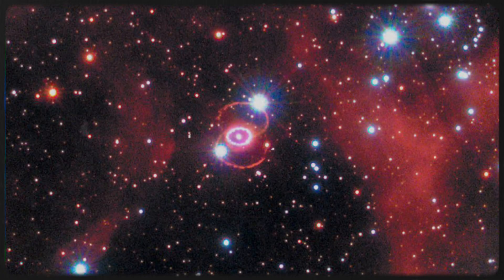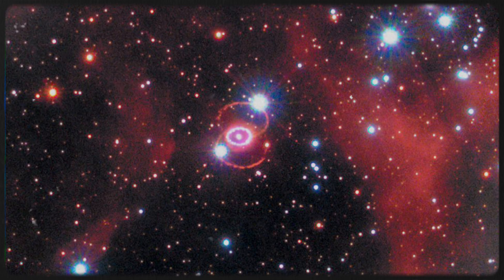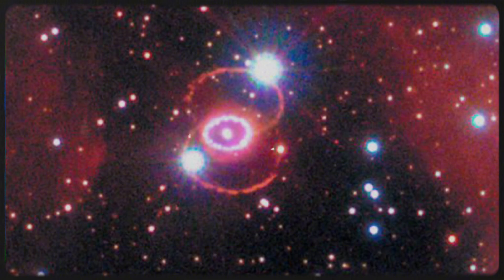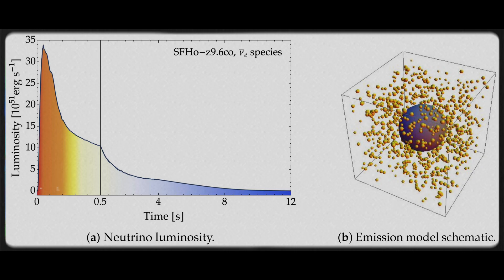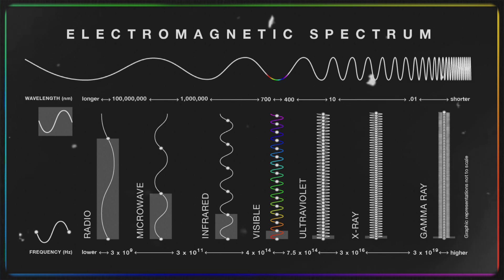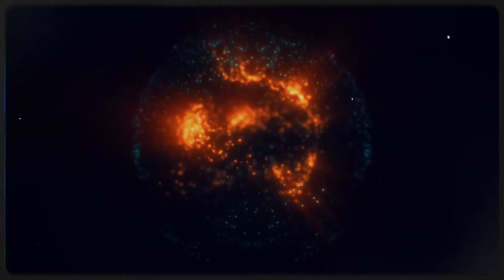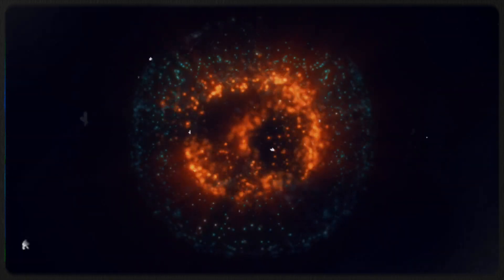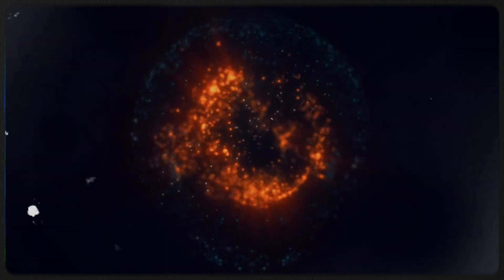In more recent history, supernova 1987A in the Large Magellanic Cloud was observed just hours after its light reached Earth. It was the first supernova ever detected via neutrino radiation, and astronomers observed it across all electromagnetic spectrum bands. These groundbreaking observations have been pivotal in refining our models of supernova behavior and deepening our understanding of their role in star formation.